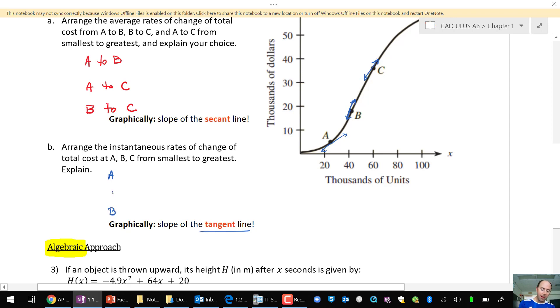So graphically here, I'm looking at the slope of the tangent line. So now they're arranged in order of the smallest to greatest. For the final part, an algebraic approach.